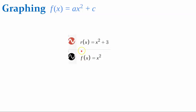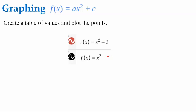We have function r, which is x squared plus 3. So c is positive 3. We are going to graph it and compare it to the parent function by creating a table of values and plotting the points.